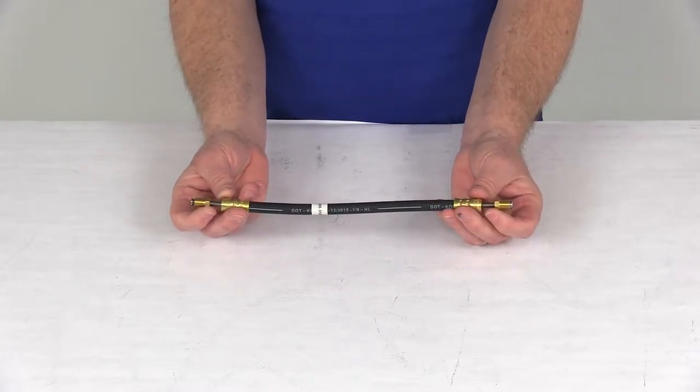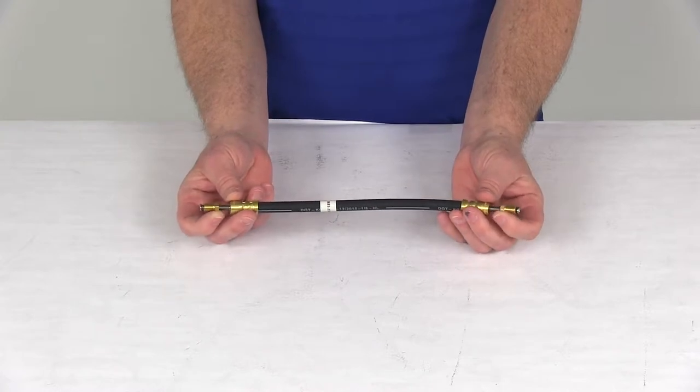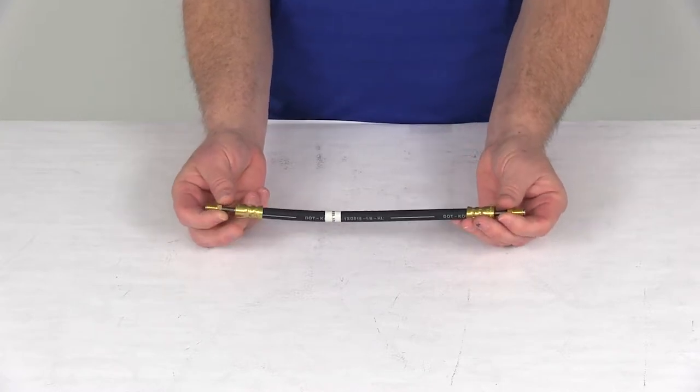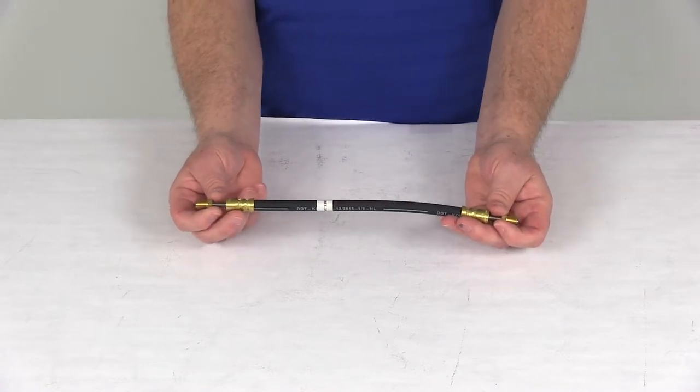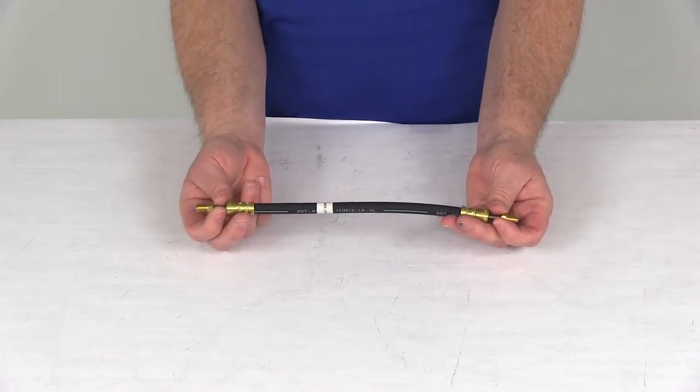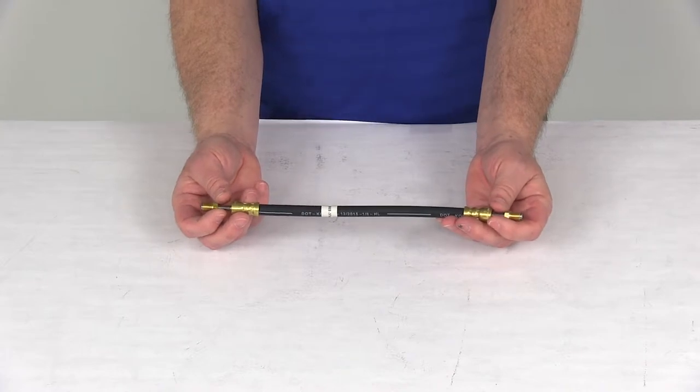Also, if you notice on the ends, they have these brass male swivel flare nut fittings on each end. These swivels will allow the flare fittings to turn without the hose twisting, and when you put it up there to tighten it down, it has an open area right here. This will let you use a brake line wrench for better grip.